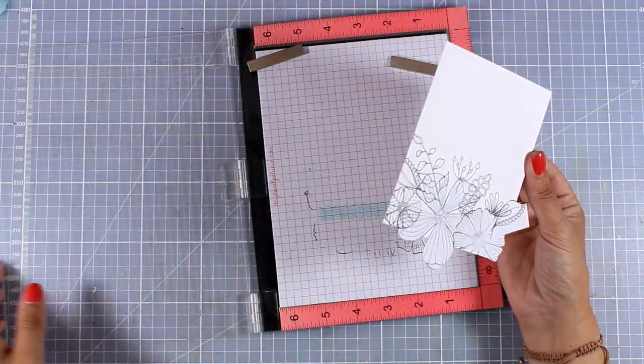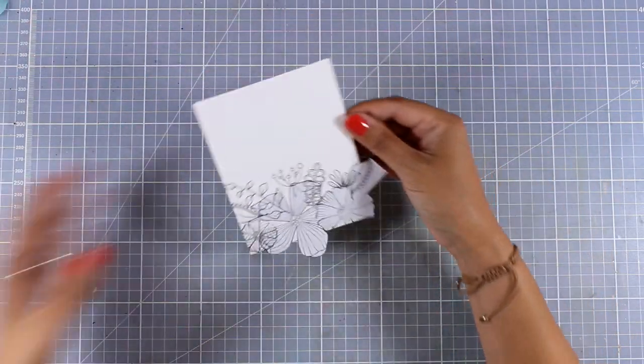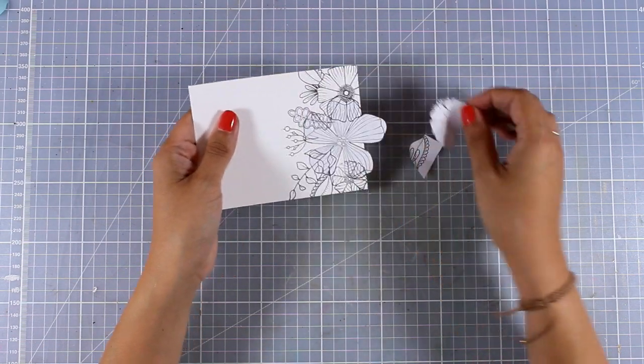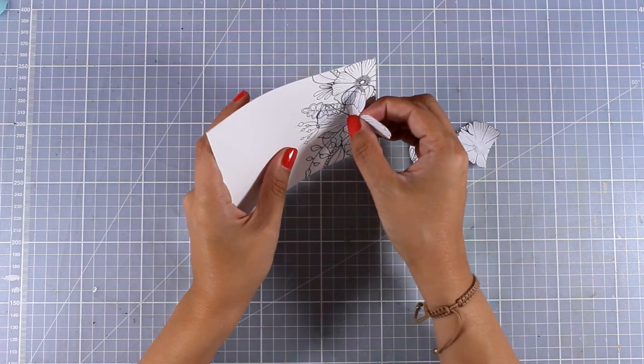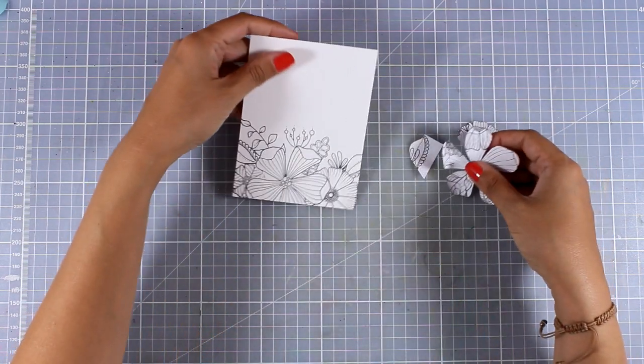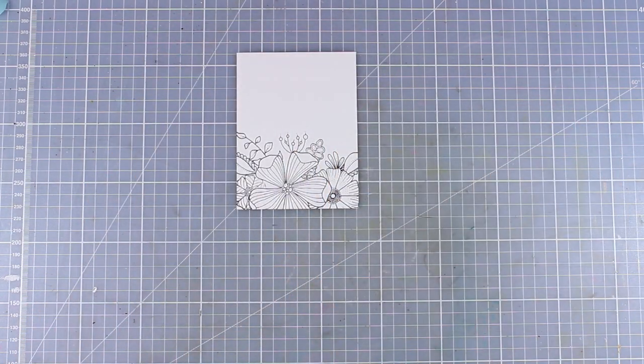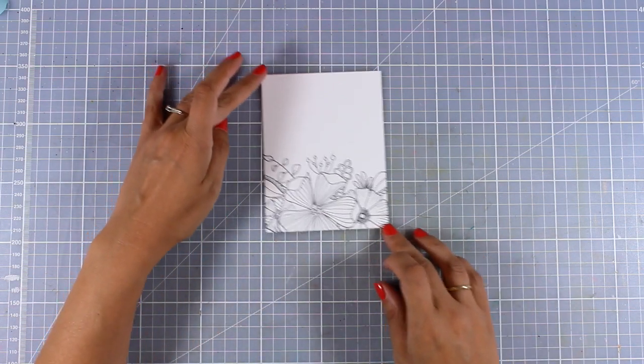And here is the finished result and the fun part where you remove all the masking and you see how the flower composition looks like. Now your panel is ready. You can just color it with your favorite medium and place it on top of a card base, but I'm going to show you how we can take it a step further and add dimension on your card.